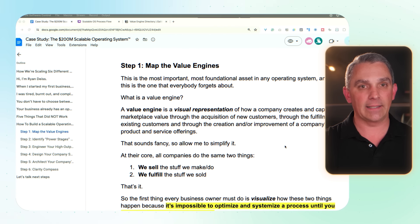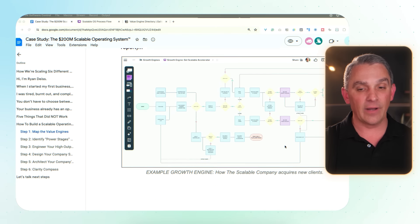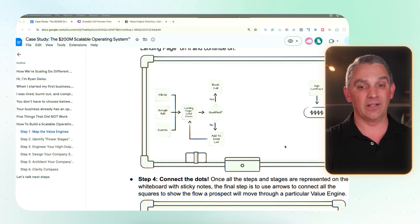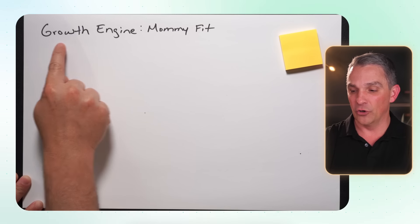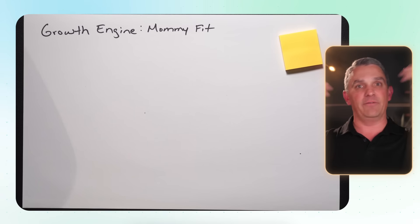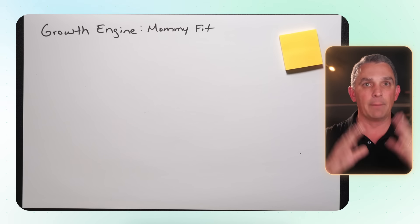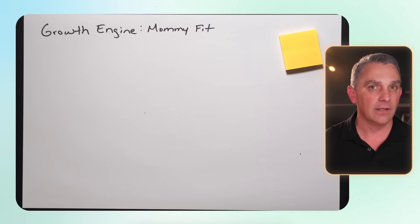Let's get into the step-by-step of how you go about mapping your very first value engine. I also wrote a comprehensive report on exactly how we do this, which I'll link in the description. Step number one is to simply identify what the engine is that we are mapping. If you look over here, you'll see 'Growth Engine — Mommy Fit.' In this case we're dealing with a fictitious business called Mommy Fit — they sell fitness training and equipment to stay-at-home moms, an e-commerce D2C company. I'm going to encourage you to start with your growth engine as well.